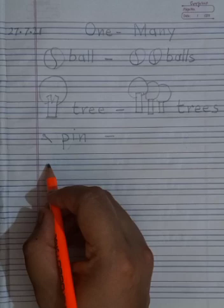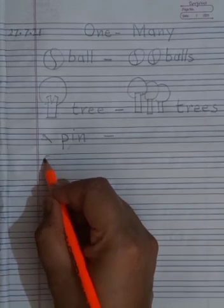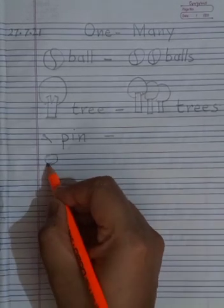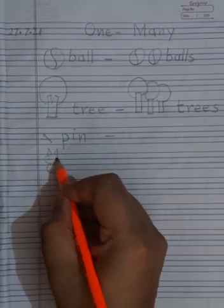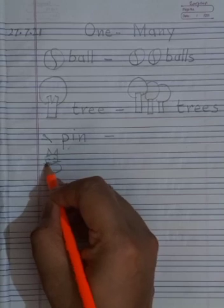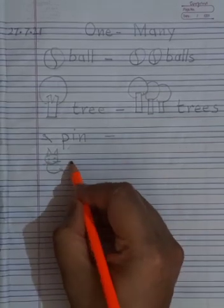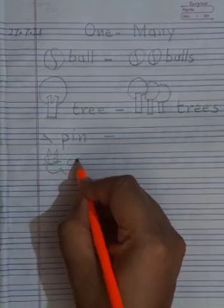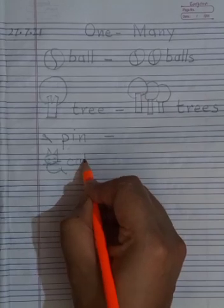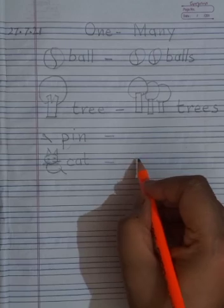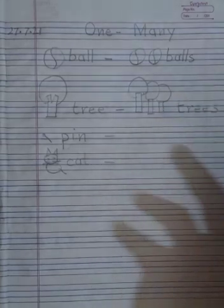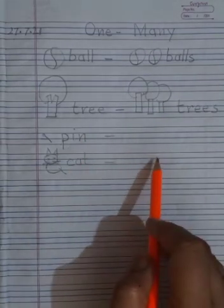Now I am going to draw a cat. And I am going to write here cat. And then here what will be? Cats. These are cats. You have to write that. Cat. Cats. Okay.